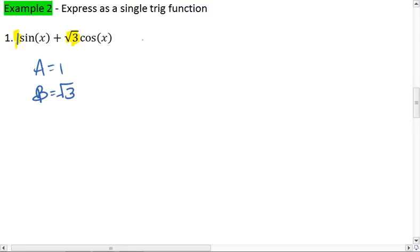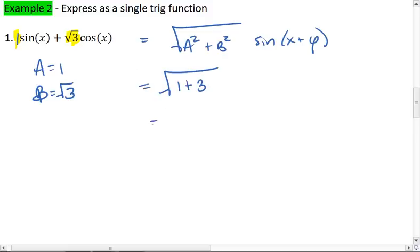So using our equation, we're going to set this equal to the square root of A squared plus B squared times sine of x plus phi. We plug in A squared and B squared. This gives us the square root of 1 plus 3. Square root of 4, which is going to be 2.